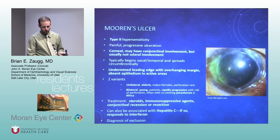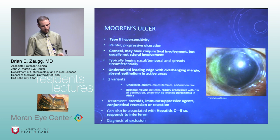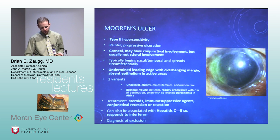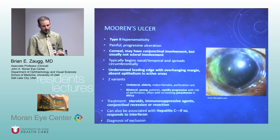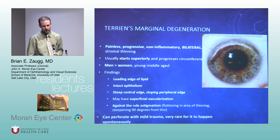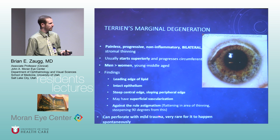Mooren's ulcer: usually painful, progressive ulceration without scleral involvement. The test question is the hepatitis C association. There's a characteristic undermined leading edge — like water eroding the side of a mountain. Treatment: immunosuppression, can resect the conjunctiva back to get inflammatory factors away. Terrien's: usually younger patients with intact epithelium, so usually no staining. There's a lipid leading edge at blood vessels entering the cornea. Against-the-rule astigmatism initially. These can perforate with mild trauma and have no great treatment — just lubricate and hope it burns out.